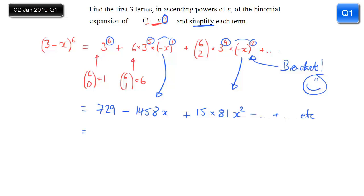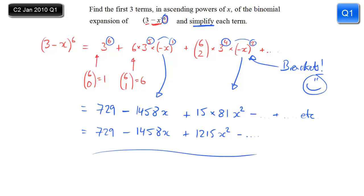Now all I have to do is simplify — that doesn't mean anything for the first two terms because they're already simplified. All I have to do is work out 15 times 81, and that comes to 1,215. That's how many x squareds I've got, and that is your answer.